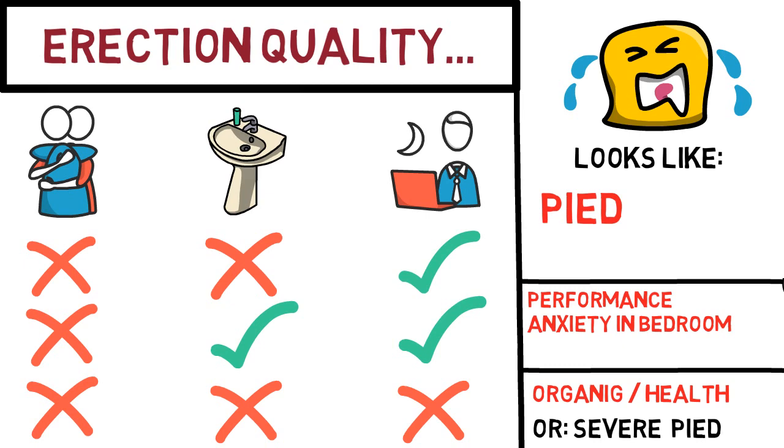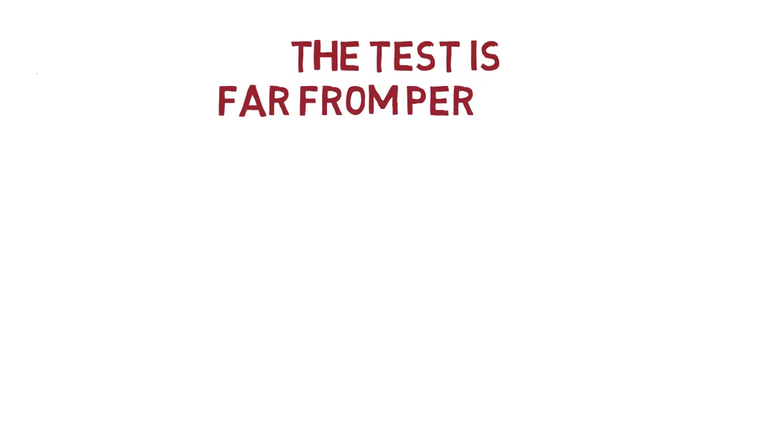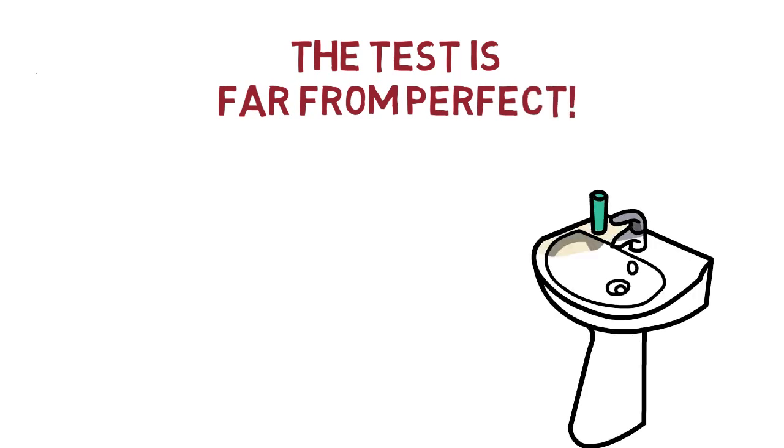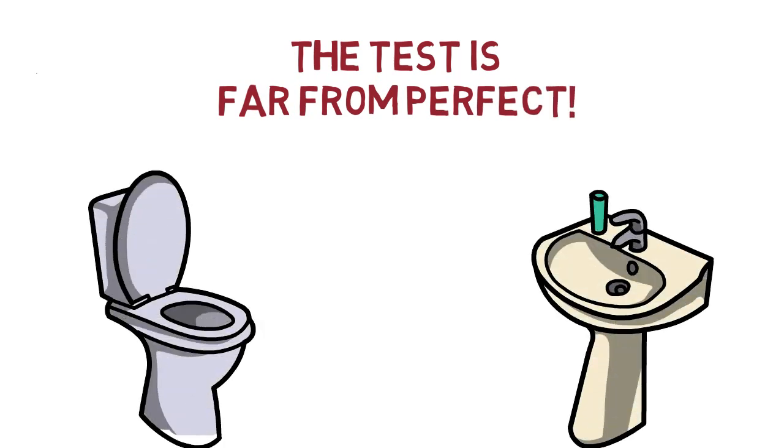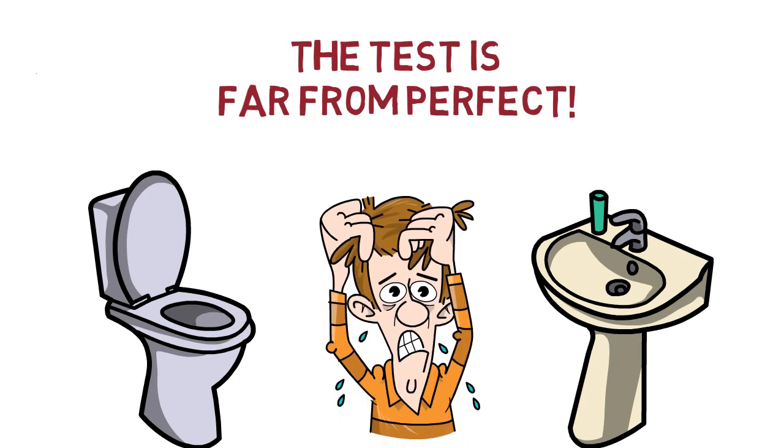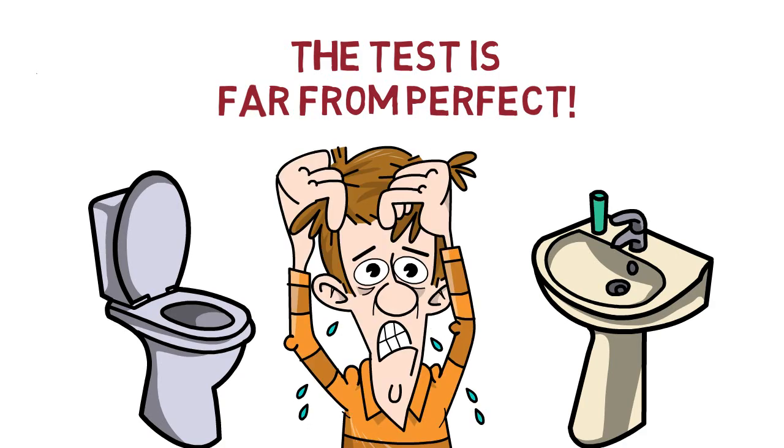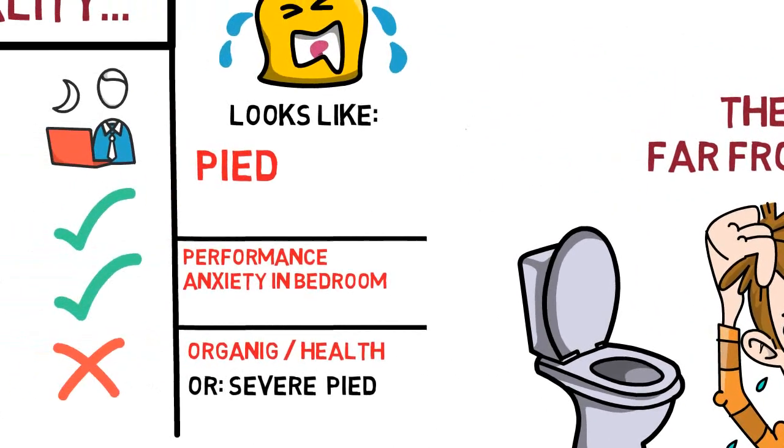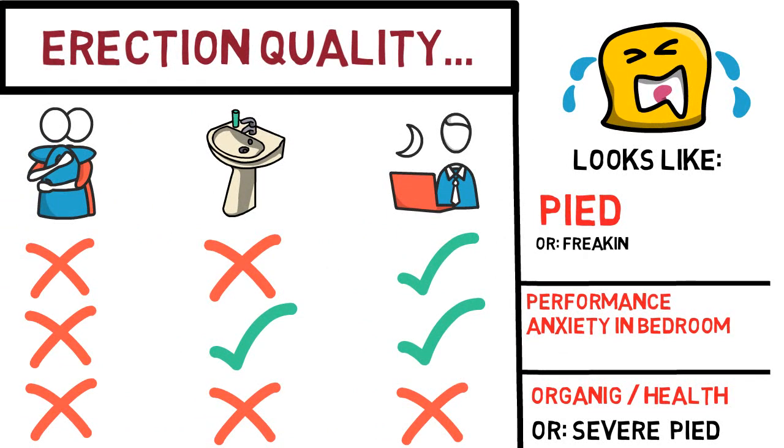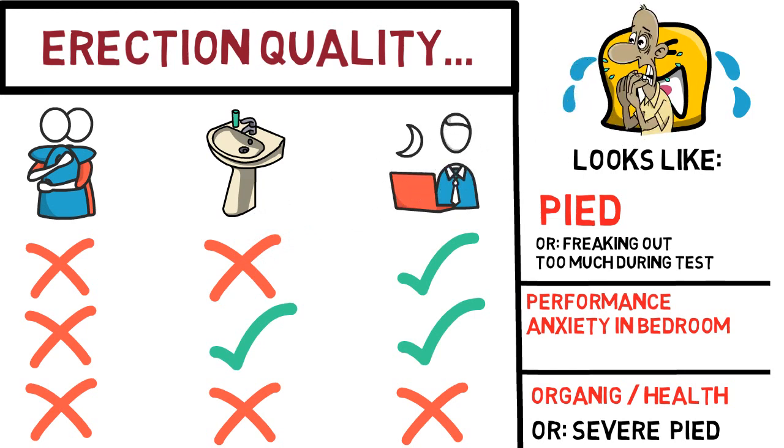However, listen carefully now because while this test may give you at least some things to consider, it is still far from perfect. Let's for example say that you run into your bathroom in order to perform the test. But while you're there, you are freaking out like crazy. You're so anxious about the results that you're having an anxiety attack. Well, obviously that might prevent you from achieving an erection right there because, well, anxiety is anxiety. So the effect could be just like the performance anxiety in the bedroom scenario. The solution here is to try it several times on days you are more relaxed.